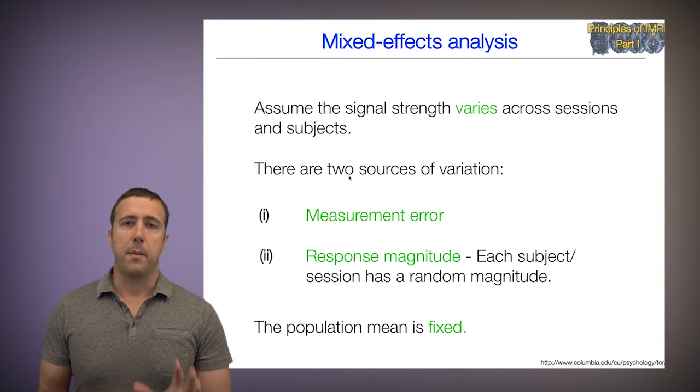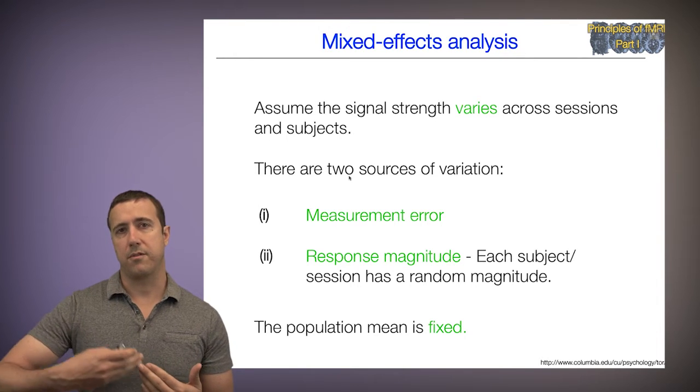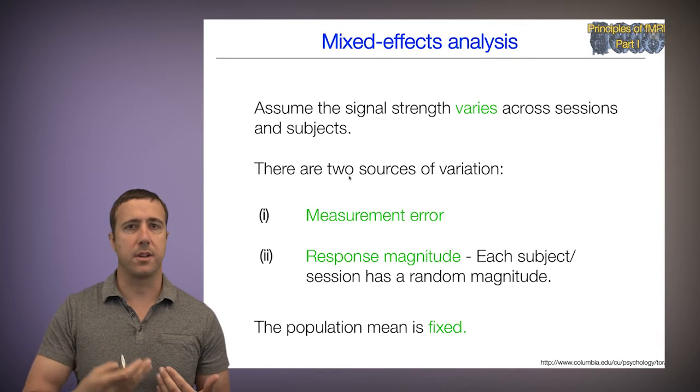Always with these models, the population mean is fixed. So we're assuming that there is some fixed population parameter for estimation, for activation, let's say, or famous versus non-famous face differences.